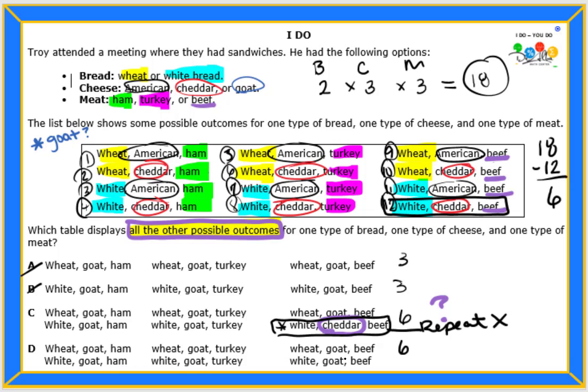Now we're looking at our D. We have all of them with the goat cheese right here. That was missing for everything. With wheat or white, with both types of bread. Also, with each kind of meat. Ham, or turkey, or beef. So the one that has six possible outcomes missing. We found out we had six possible outcomes missing because there was supposed to be a total of 18, and the list already had 12. So six were missing. That left C or D. But we see that in C, they're missing one because they repeated white cheddar beef, which was already in the list. And so our correct answer is D.